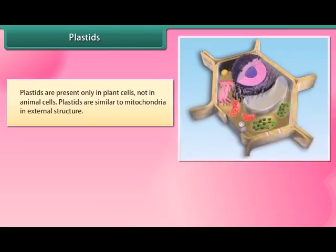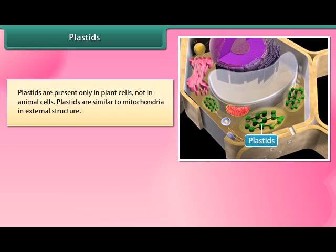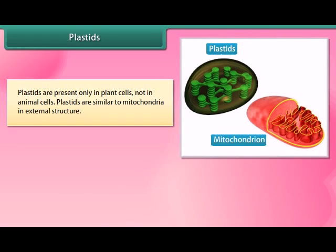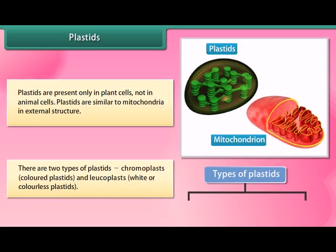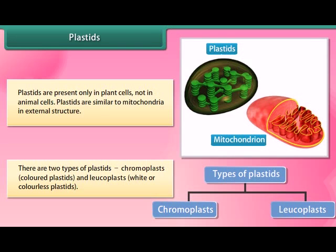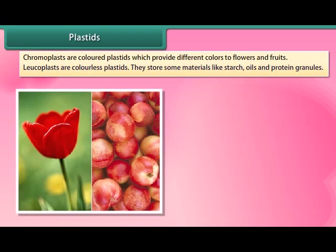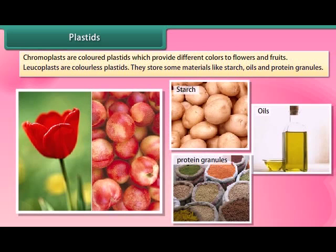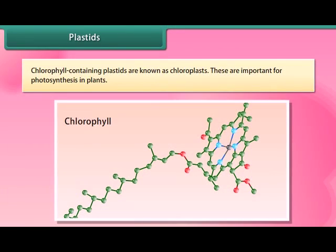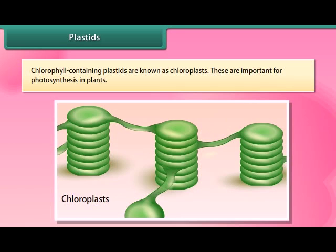Plastids are present only in plant cells, not in animal cells. Plastids are similar to mitochondria in external structure. There are two types of plastids: chromoplasts (colored plastids) and leucoplasts (white or colorless plastids). Chromoplasts provide different colors to flowers and fruits. Leucoplasts are colorless plastids that store materials like starch, oils, and protein granules. Chlorophyll-containing plastids are known as chloroplasts, and these are important for photosynthesis in plants.